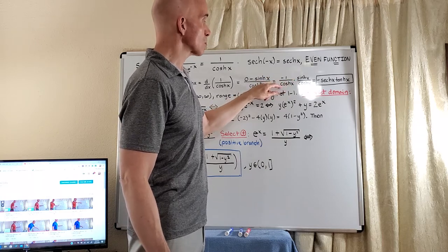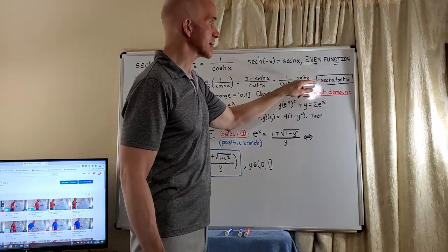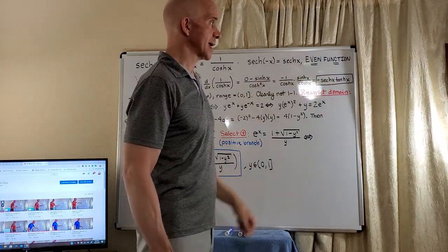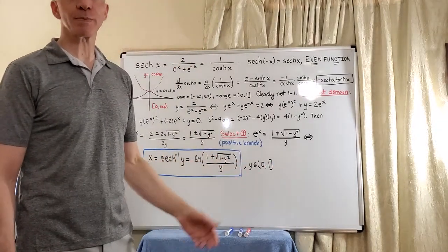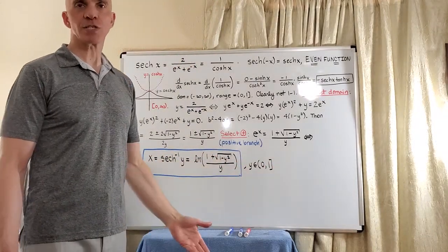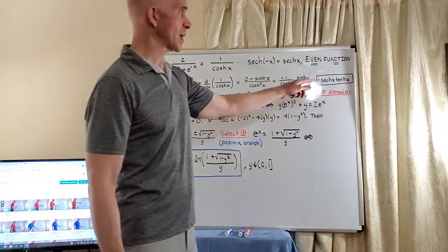And by definition, this would just be the negative of hyperbolic secant times hyperbolic tangent. So that really looks very similar to the derivative of secant, which is just secant tangent, except we have the negative sign.